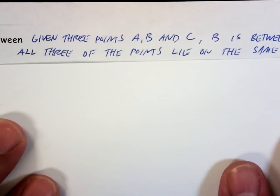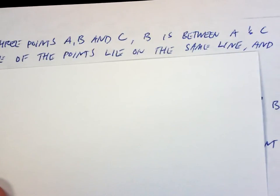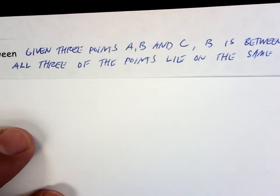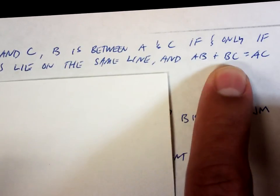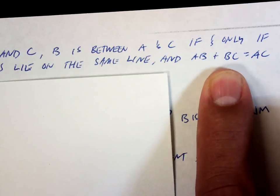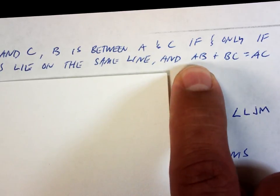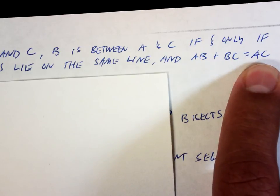Between. What does it mean to be between? Given three points A, B, and C, B is between A and C if and only if all three of the points, AB + BC = AC. Kind of a mouthful. What does that mean? So B is between A and C. Let's say from here to San Antonio is a straight line through San Marcos. If I know how far it is from Austin to San Marcos, and I know how far it is from San Marcos to San Antonio, then I can add those two up and it tells me how far it is from Austin to San Antonio. Again, assuming they're in a straight line.